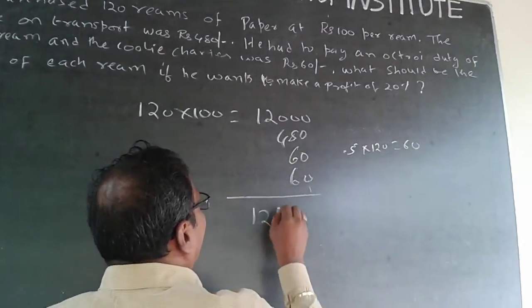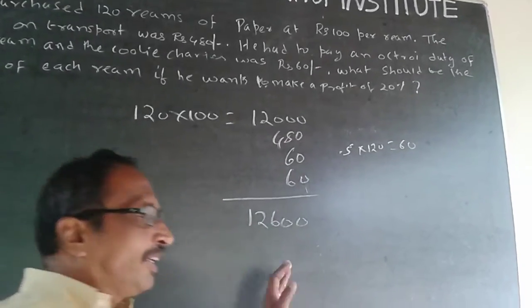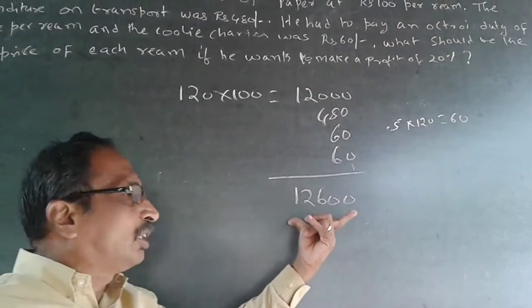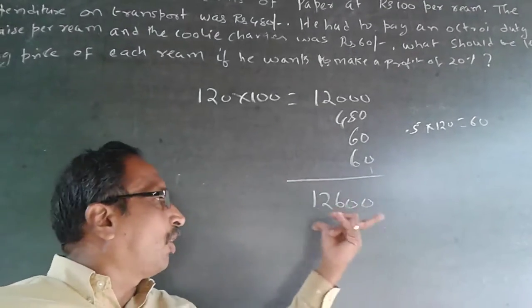Now this total cost will be 12,600. Whatever I spend for converting it will be my total cost. This will be equal to 12,600.